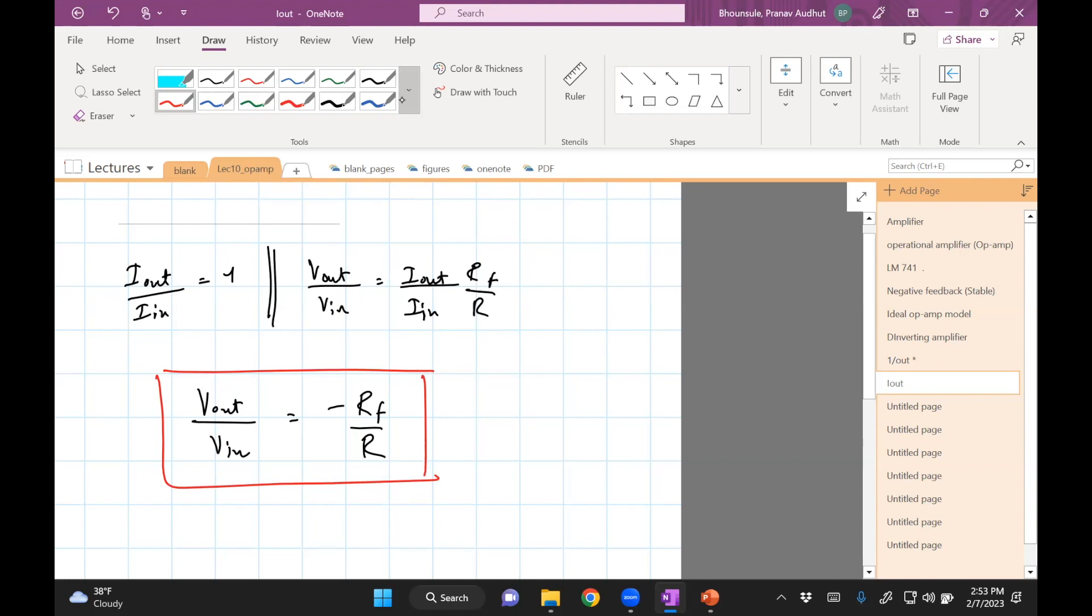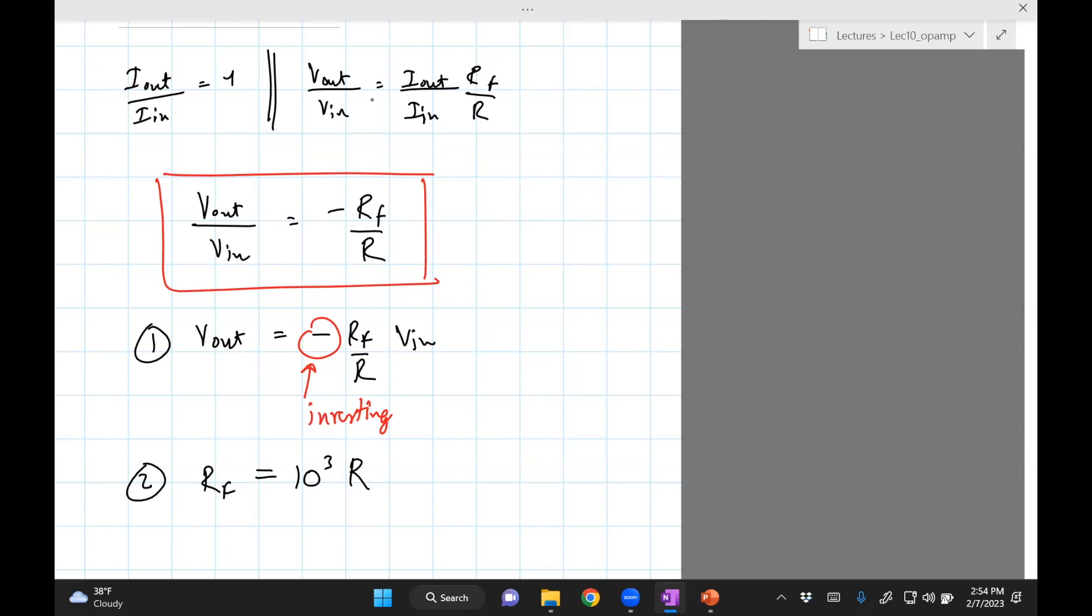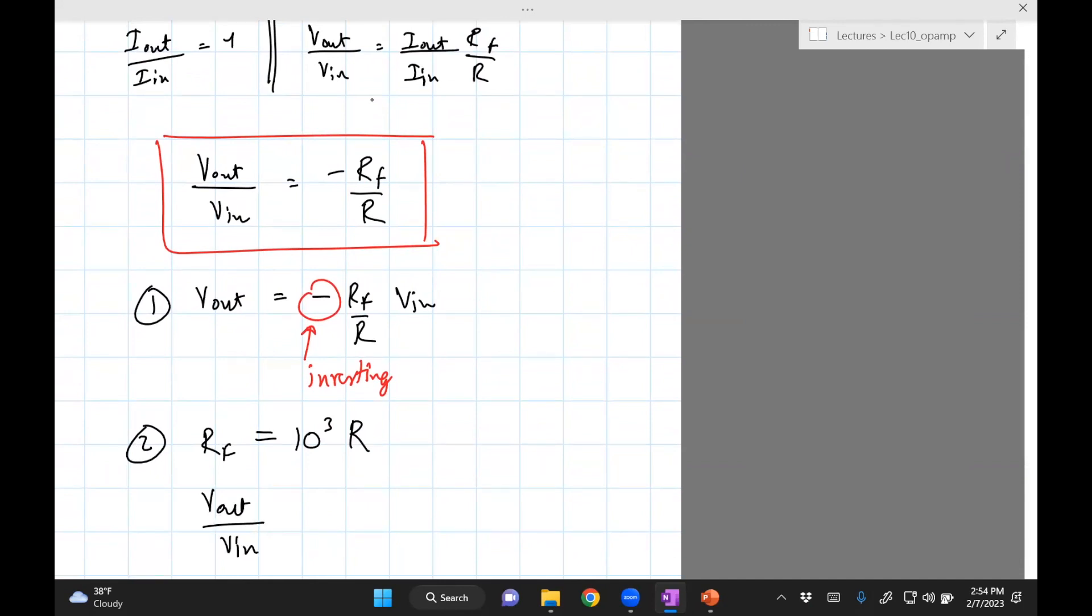So there are two things you can note from here. Number one, V_out is the negative of V_in. So this sign here means that it is inverting. The second thing is the amplification. You want the signal to be amplified. So if you make RF say equal to 10,000 times R, if you choose R to be one kilo ohm and you choose RF to be 1,000 kilo ohms, then you see that V_out divided by V_in would be negative 1,000. This is the amplification, and you can achieve amplification by simply choosing the right values for the resistor.